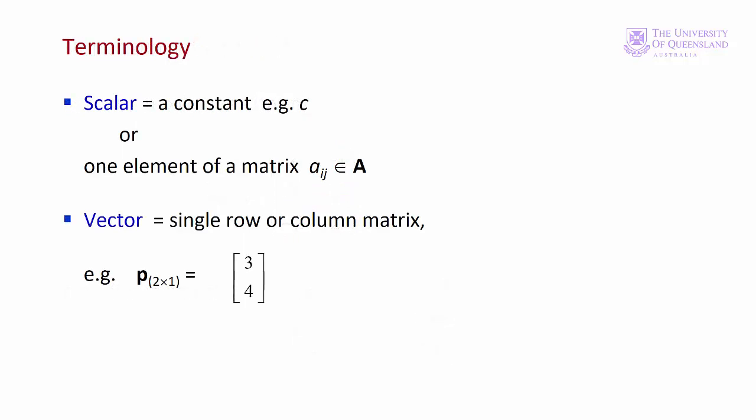When we have a constant either as a number or as a letter we call it a scalar. That's also what we call one element of a matrix. A vector is a particular type of matrix which has only one row or one column. We'll discuss vectors in more detail in module three.